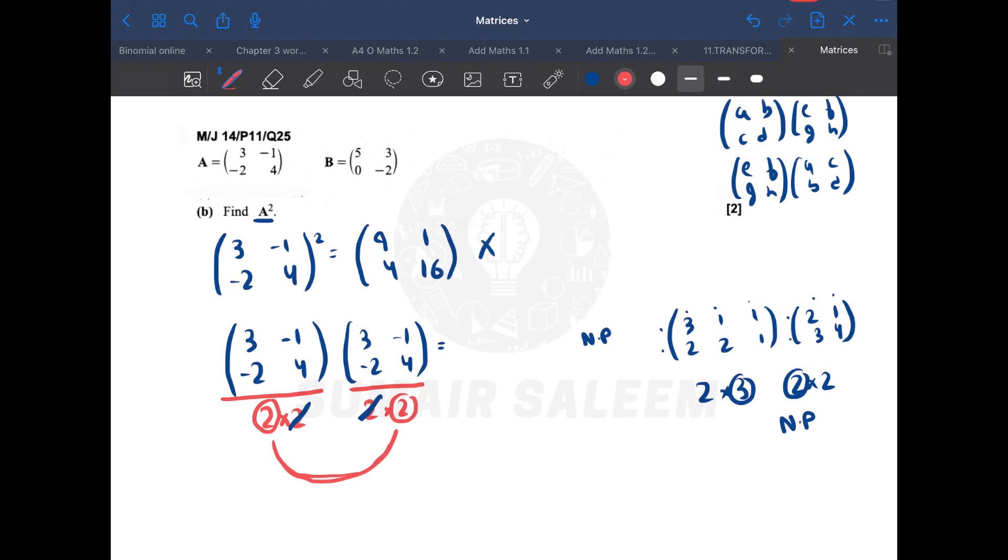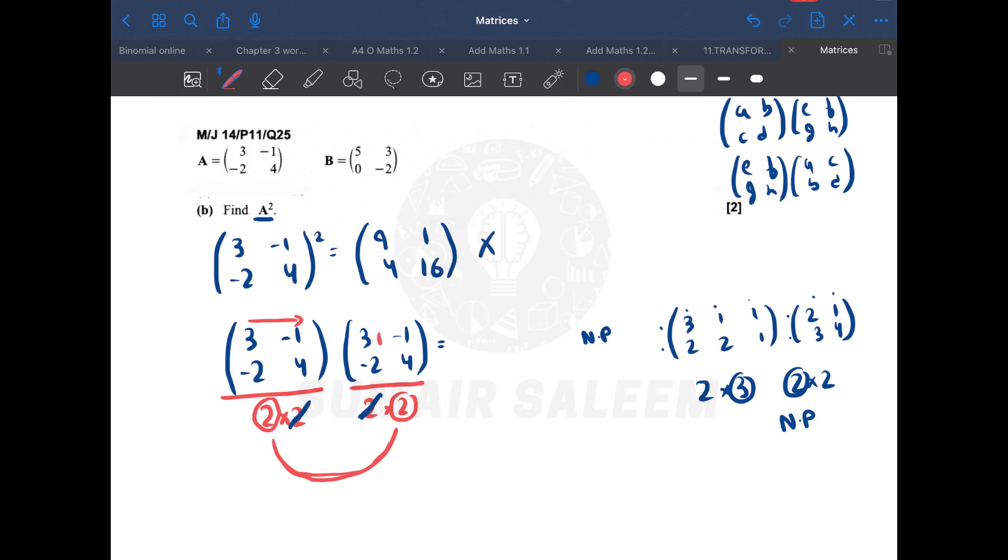Now we need to apply French dive. How will you do that? Listen. First thing: 3 into 3, that makes 9. When the dive is complete, then you have to apply plus. Then -1 into -2. Do you get this? Okay, now this dive is done. Let's start with the other one. 3 into -1, right? When the chapter dive is complete, you have to add -1 into 4.